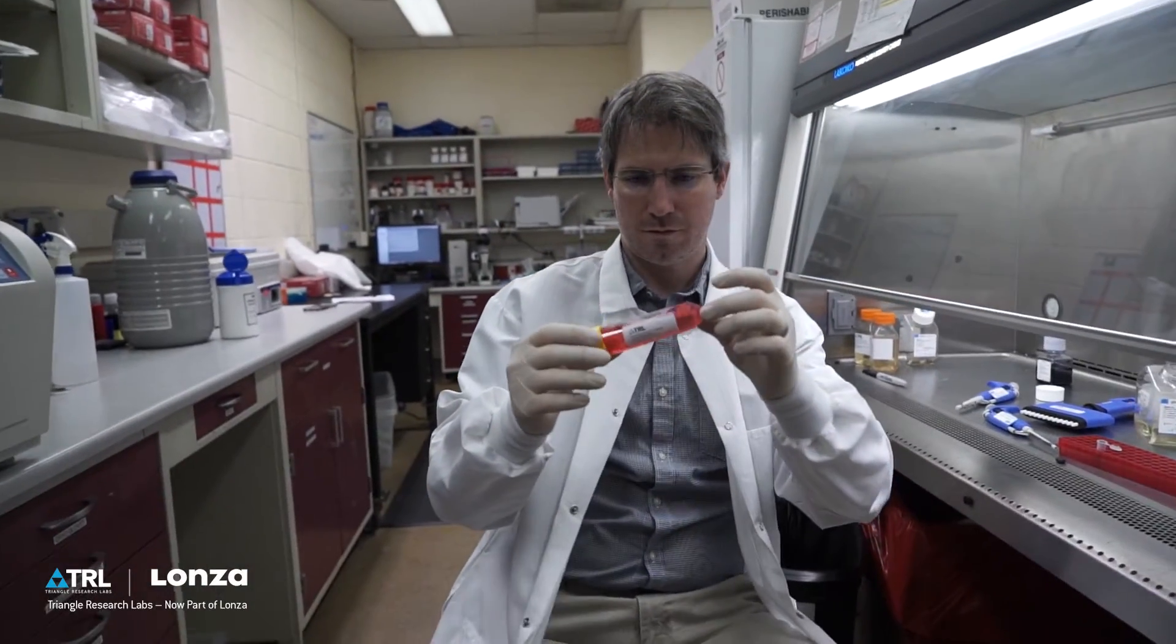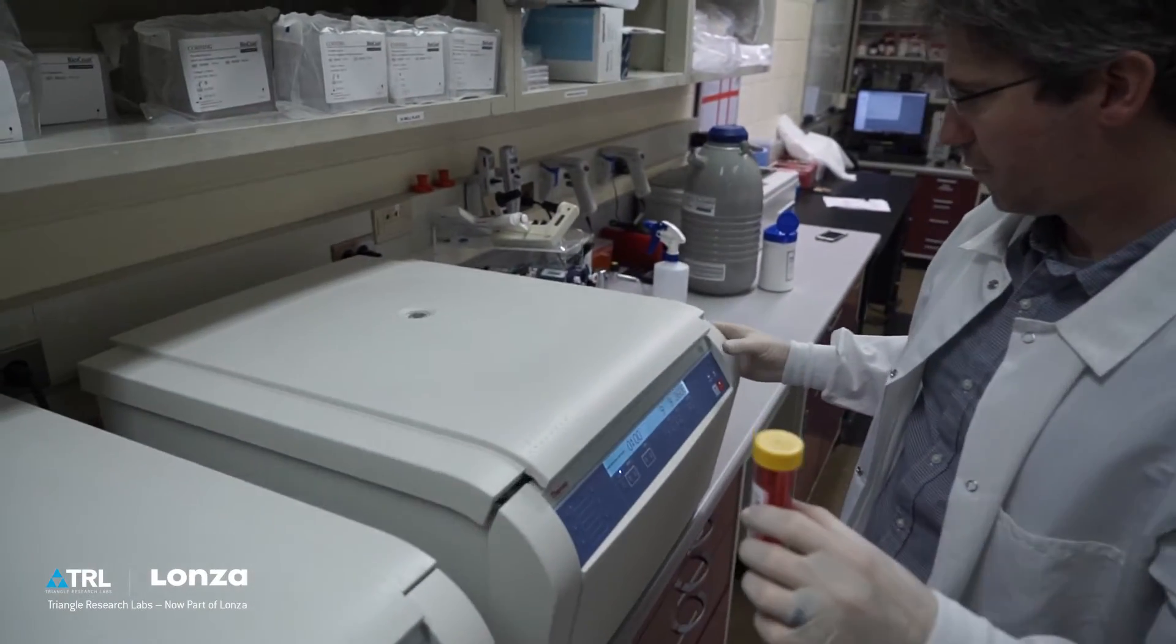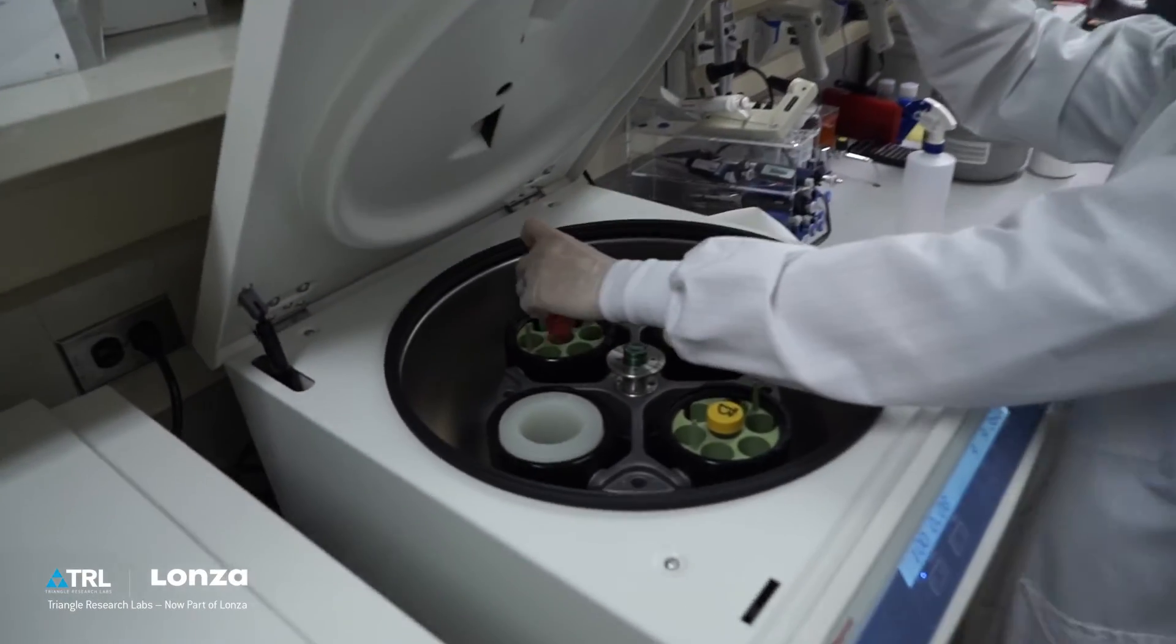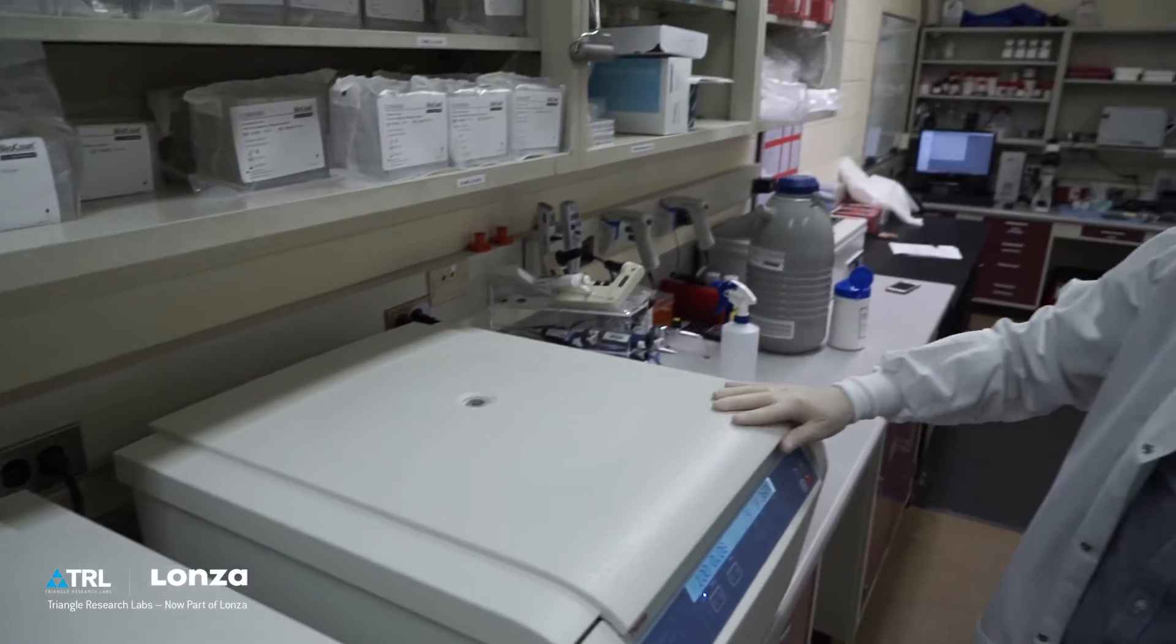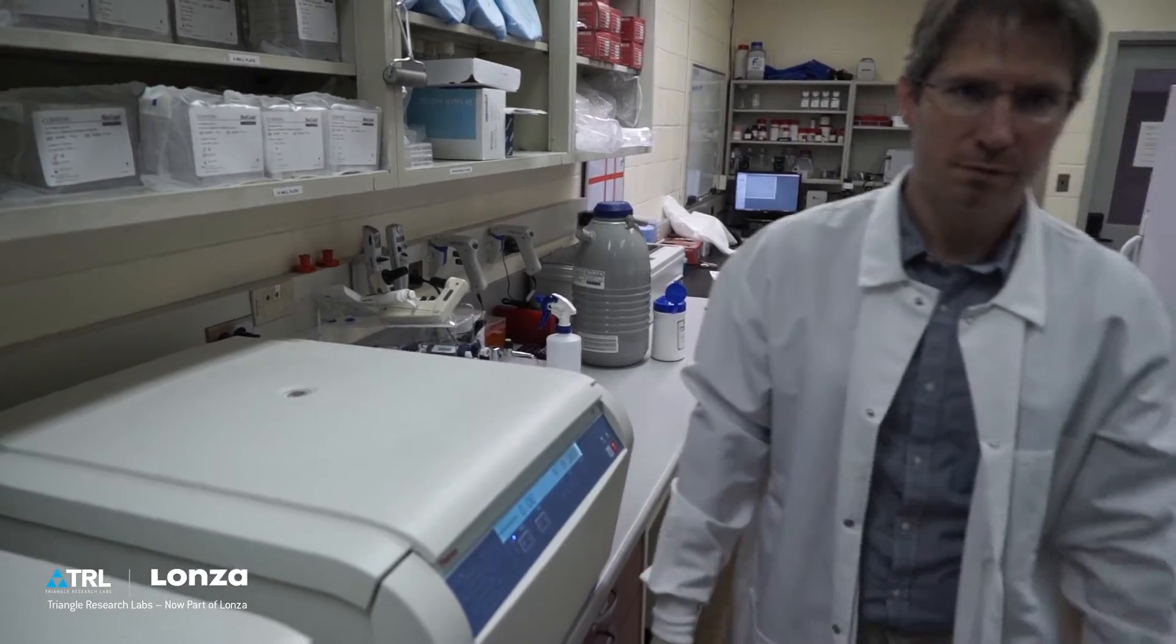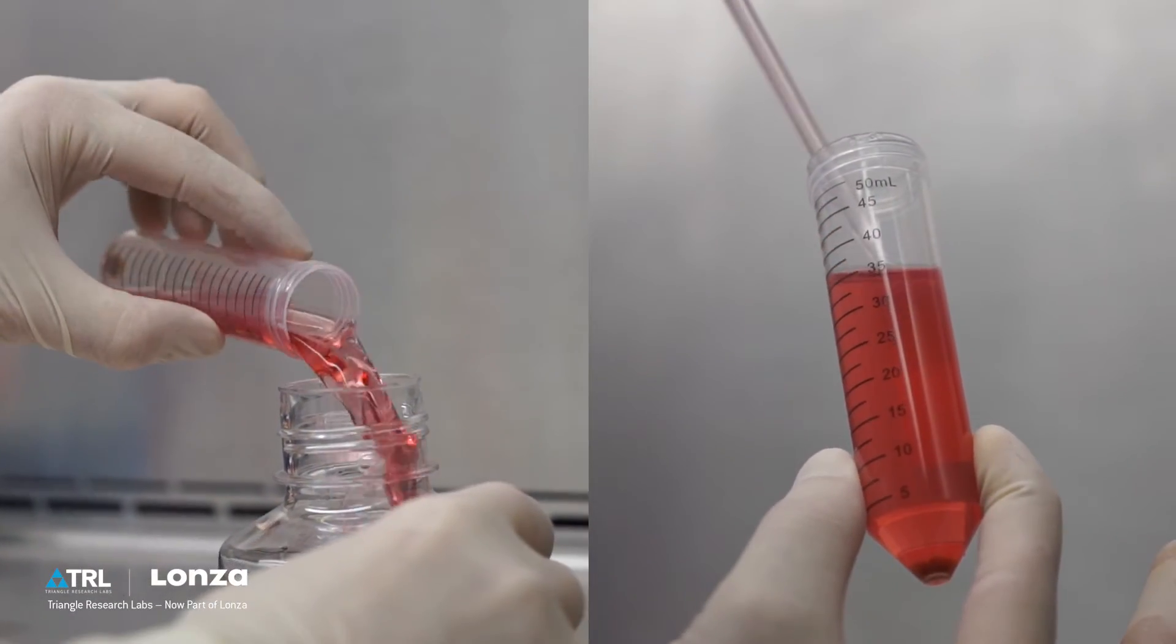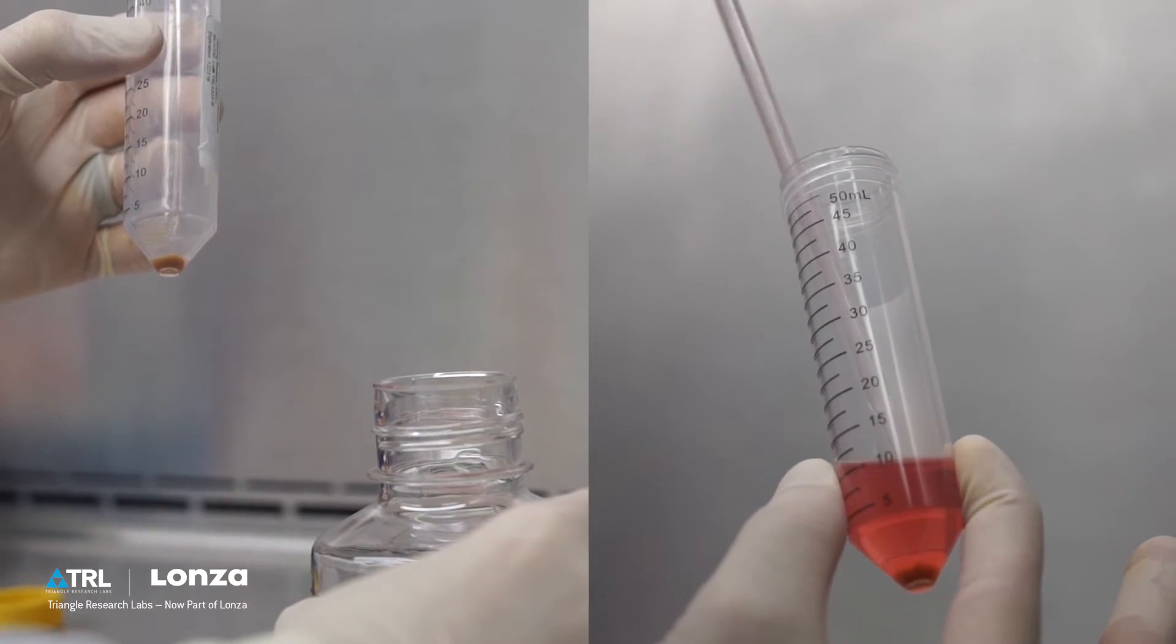Suspend the cells by carefully rocking the 50 milliliter conical tube in your hands for a few seconds. Centrifuge the tube at room temperature following spin speed and duration guidelines in the protocol. Remove the tube from centrifuge, disinfect and transfer to the biological safety cabinet. Pour supernatant into a waste bottle or aspirate away.